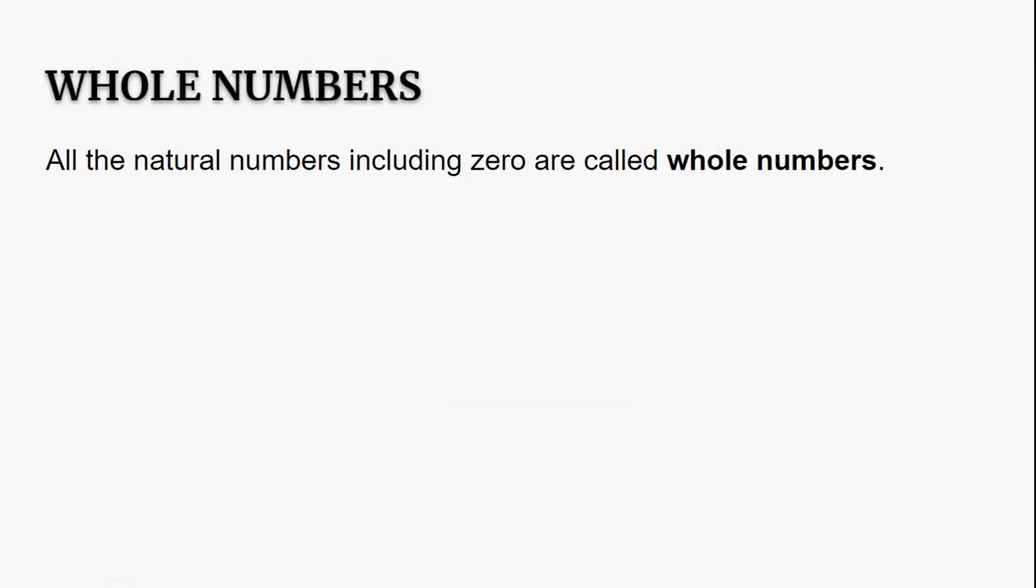Next coming to whole numbers. All the natural numbers including 0 are called whole numbers. They are represented by capital W. That is, W is equal to set of 0, 1, 2, 3 and so on.